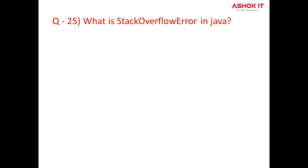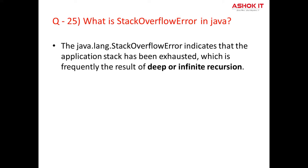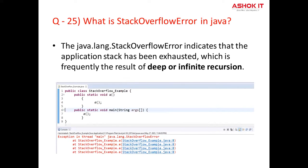Question number twenty-five: What is stack overflow error? The java.lang.StackOverflowError indicates that the application stack has been exhausted, which is frequently the result of deep or infinite recursion. In this example, the method A is recursively called, which causes a StackOverflowError. It extends the VirtualMachineError class, which signals that the JVM has failed or has run out of resources and is unable to run. So all these are the top 25 questions from exception handling. Thanks for watching. Please like and subscribe to our channel for more updates.